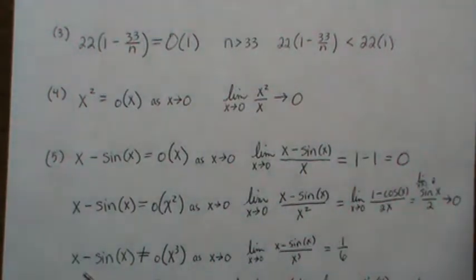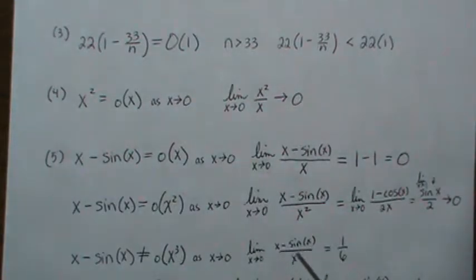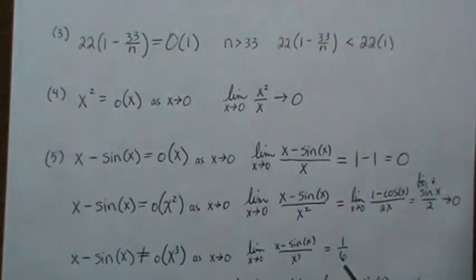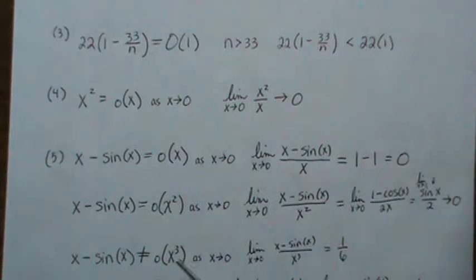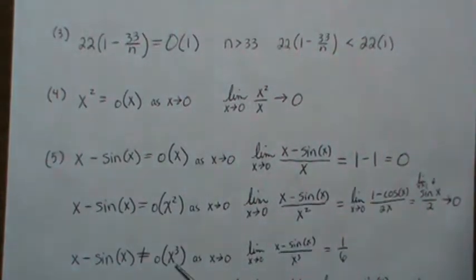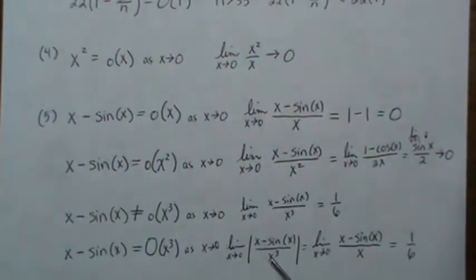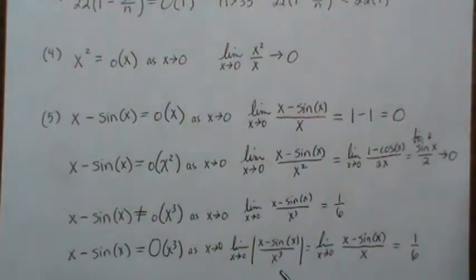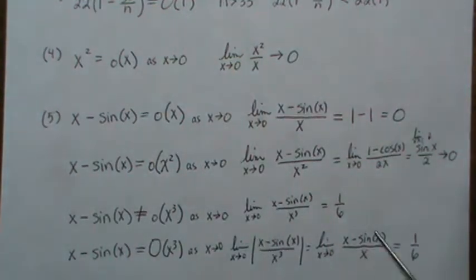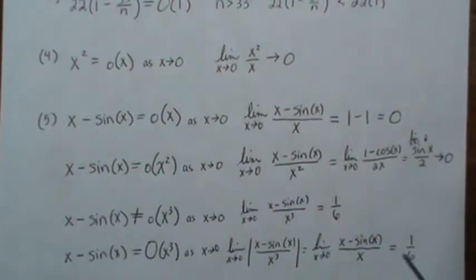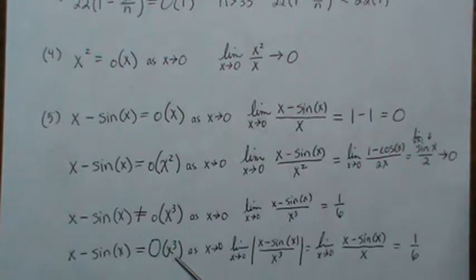Now, x − sin(x) is not little o of x³, because if you look at this ratio it goes to a value — you can do that with L'Hôpital's rule again — it goes to the constant 1/6. So it's not little o. That says that the ratio goes to some constant, so these two functions behave similarly. That means x − sin(x) is big O of x³. You can show that by looking at the absolute value: approaching from the right or left, the ratio is always positive, and we just showed the limit goes to 1/6. So these two functions do behave similarly as x goes to 0.